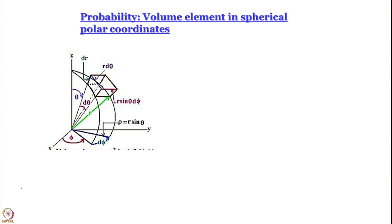When we talk about spherical polar coordinates, one coordinate is r — up to here is r — and we increase that coordinate by an amount dr. So that is one side of our volume element.